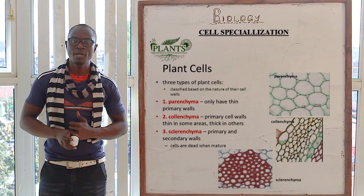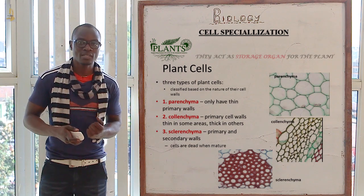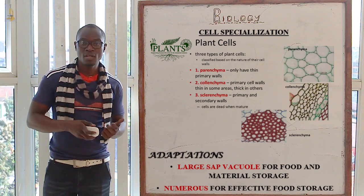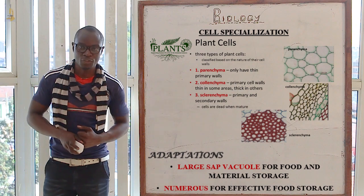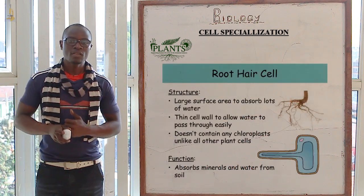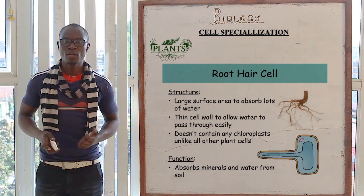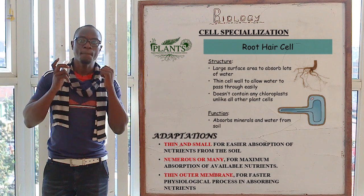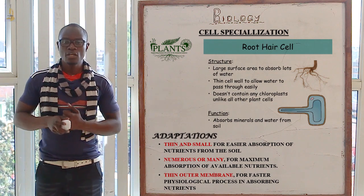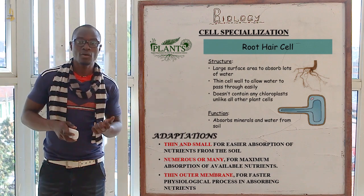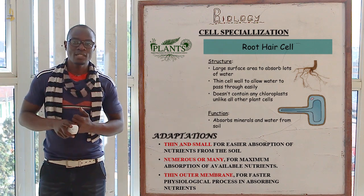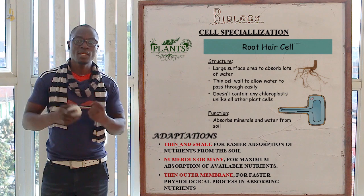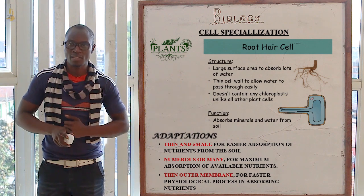Let's look at the storage cells, which are mainly the food storage reserve of the plant. Their function is that they store the plant food. Their adaptations are that they have a very large sub-vacuole and they are also very numerous. We also have the root hair cells, whose function is to absorb nutrients — that is water and mineral salts — from the soil into the plant. Their adaptations include being thin, very small, and very numerous, and they also have a very thin membrane for easier absorption of minerals and water and mineral salts from the soil.